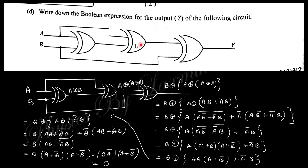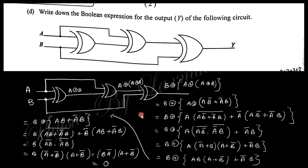The next question asks to write down the Boolean expression for a circuit output. The circuit uses XOR gates. The first XOR gives A B-bar + A-bar B. Taking the XOR of that result with another input and simplifying: A XOR (A XOR B) simplifies step by step, with A-bar·B-bar and A-bar terms, and the final result simplifies to 0.